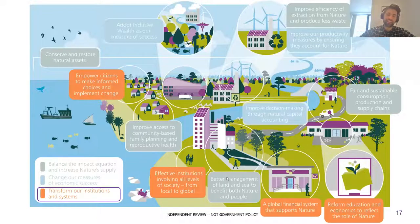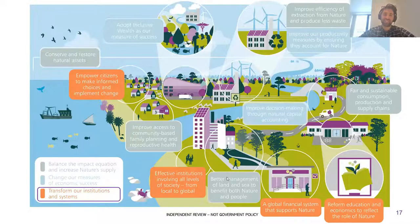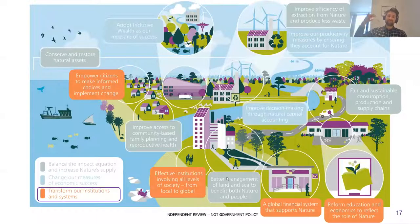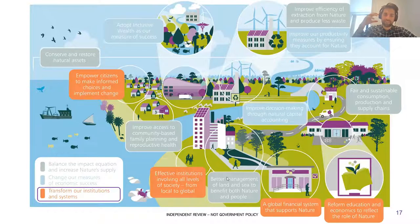A combination of the right market structures, incentives, and regulation can encourage private finance to shift in a direction that supports the natural world, alongside increased public finance for our natural assets. On education, the review highlights that in order to truly appreciate something like the natural world, we need to learn about it — even from a young age, thinking about improving curriculum from primary and secondary education upward. On institutions, whether at the local or global level, COP26 in Glasgow and COP15 — the biodiversity COP in Kunming, China — are opportunities to build effective institutions.